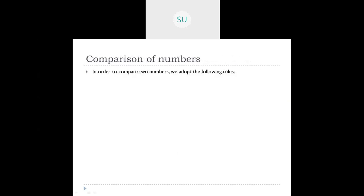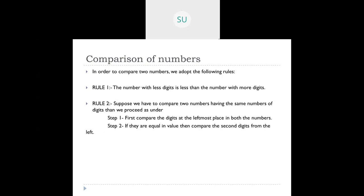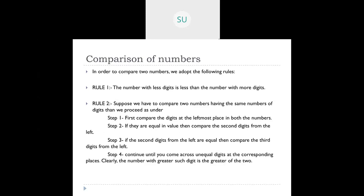For comparison of numbers: if two numbers have a different number of digits, the one with fewer digits is smaller. If they have the same number of digits, compare the leftmost digit — whichever is greater is the greater number. If the leftmost digits are equal, move to the second digit from the left, then the third, and continue until you find a difference. Always compare digits in the same place value.